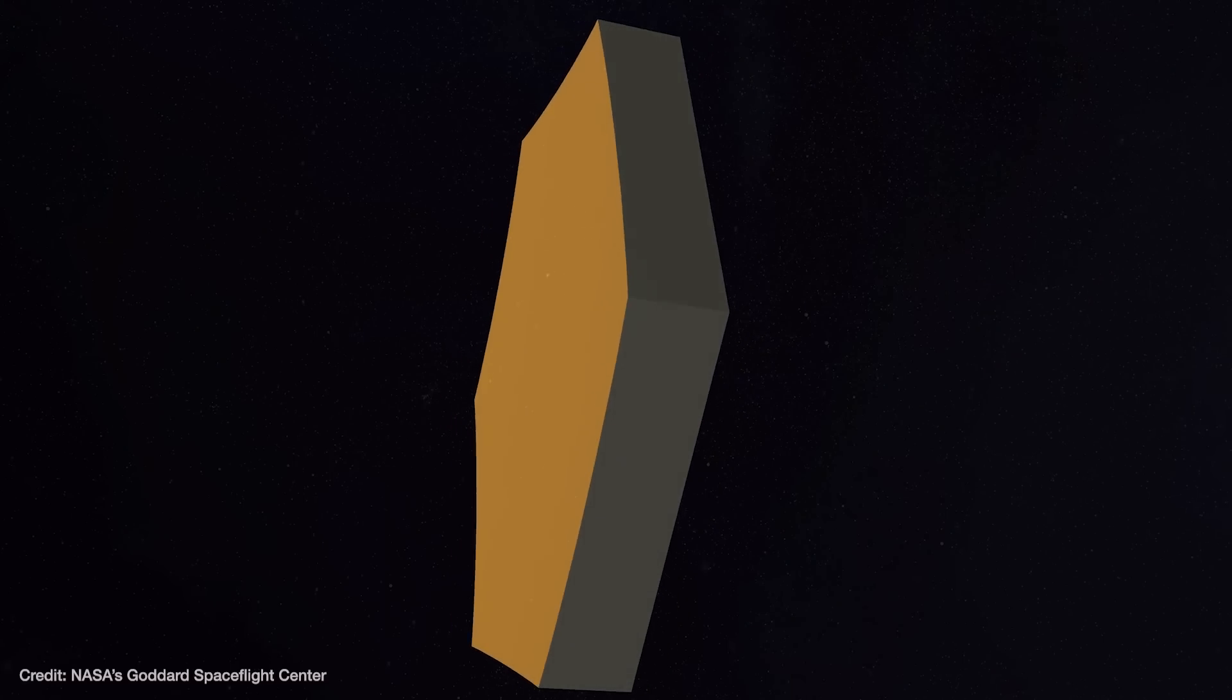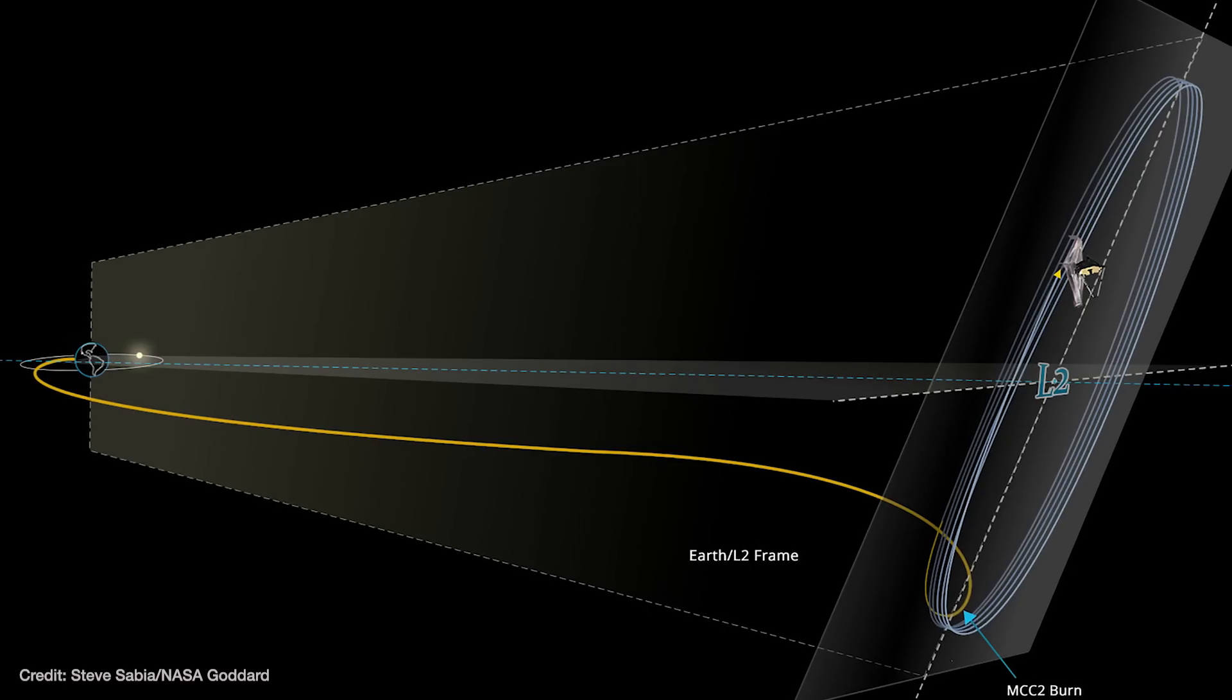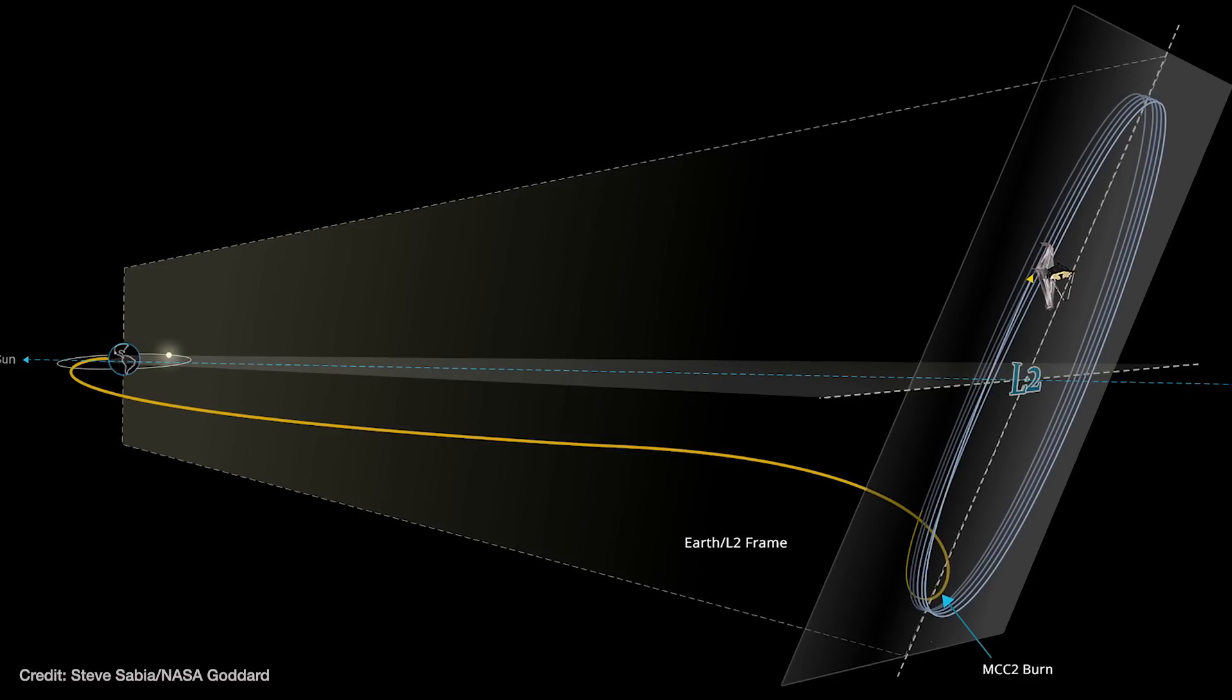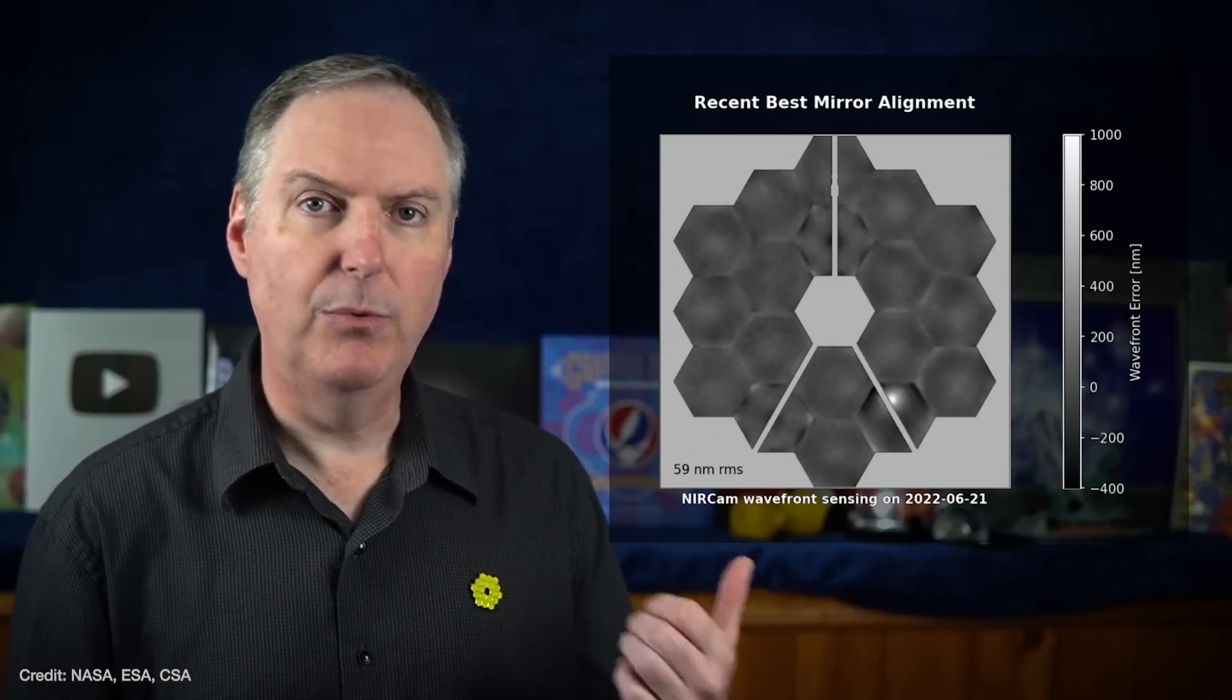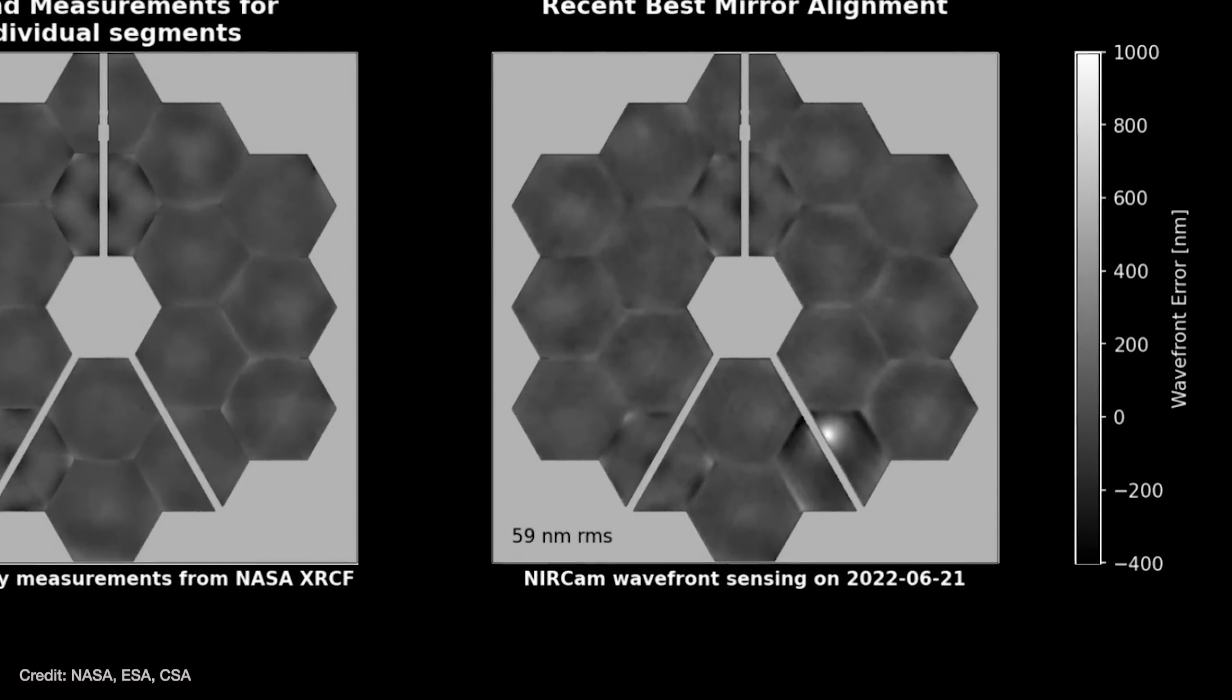Even better, Webb's mirror segments can be adjusted to cancel out some of the effects of those impacts. This mitigation strategy was based on modeling the micrometeoroid environment at L2 long before Webb was ever launched. And they estimated that Webb's mirror should accumulate one or two hits a month, with most of those hits being so tiny they could effectively be canceled out by routine mirror adjustments. Now that's true of the tiny strikes, but maybe once every couple of years or so, the mirror should be hit by something a little larger, like the one that hit back in May. To make matters worse, it hit on a part of the segment that couldn't be fully corrected either.